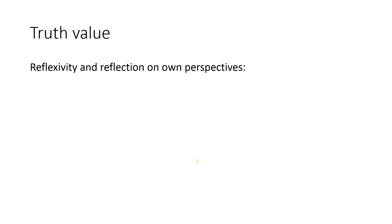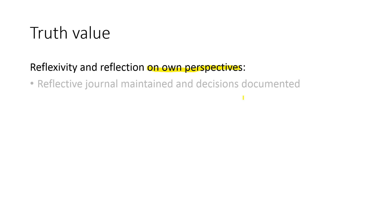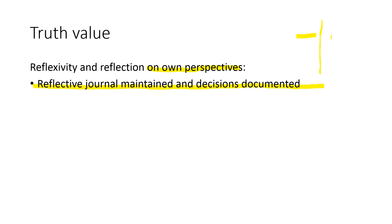Looking at truth value first: reflexivity and reflection on one's own perspectives means identifying researcher biases. A reflective journal should be maintained and decisions documented. You could use a word document with a table — participant statements on one side, your own reactions and biases on the other — so it's clear what's going on throughout the research process.